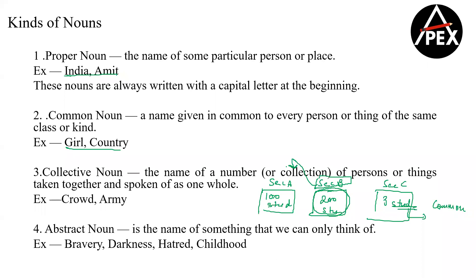Just like that, if we look at the collective noun 'army' — anyone who is protecting my country is a soldier. There can be 100 soldiers in an army — let's say Indian Army. The soldier will be a common noun, but army will be a collective noun.